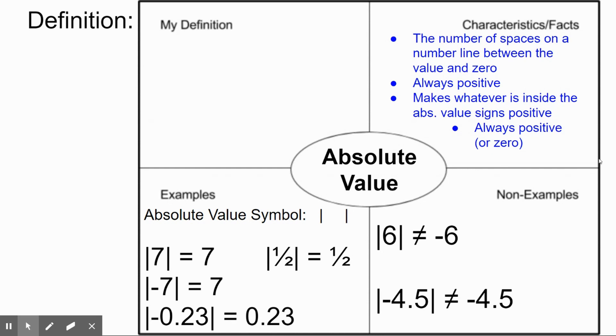For characteristics and facts, we have quite a few. The first and main characteristic or fact is it's going to be the number of spaces on the number line between the value and zero. And that's actually going to really closely tie it in with our definition. We're also going to say that it's always positive. Whatever we put in for an absolute value, it's always positive. It makes whatever is inside the absolute value signs positive.